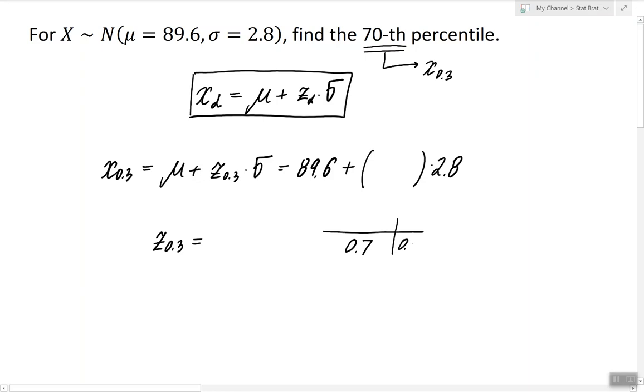That value is going to give us the following results: z.3 is equal to 0.52. Therefore x.3 and the 70th percentile are equal to 91.056.